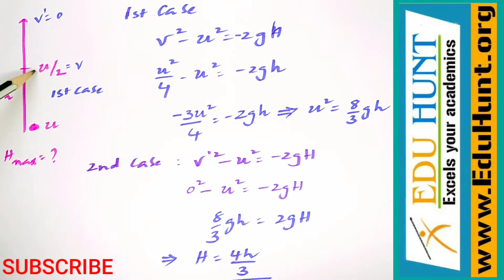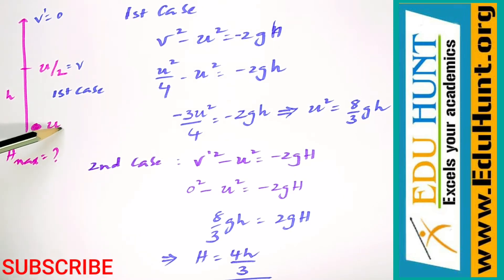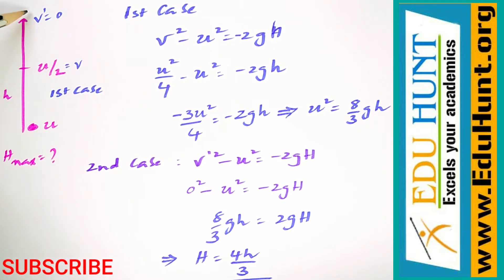At height h, its velocity becomes u by 2. Now the question is: to what maximum height can the body reach? To find this height, we need to find the initial velocity. If initial velocity is known, we can find the maximum height.